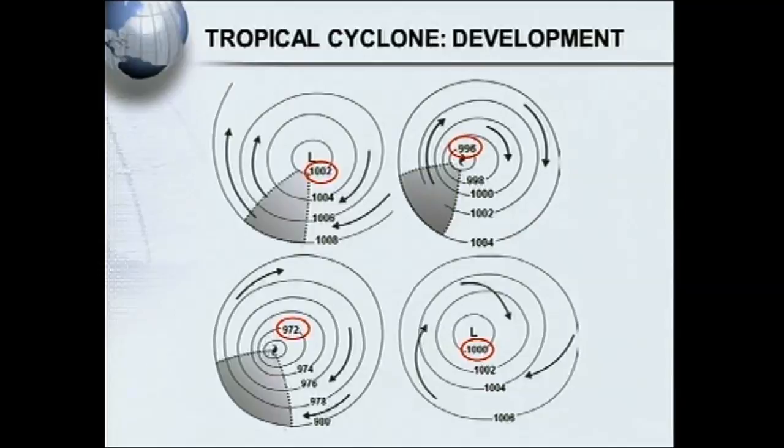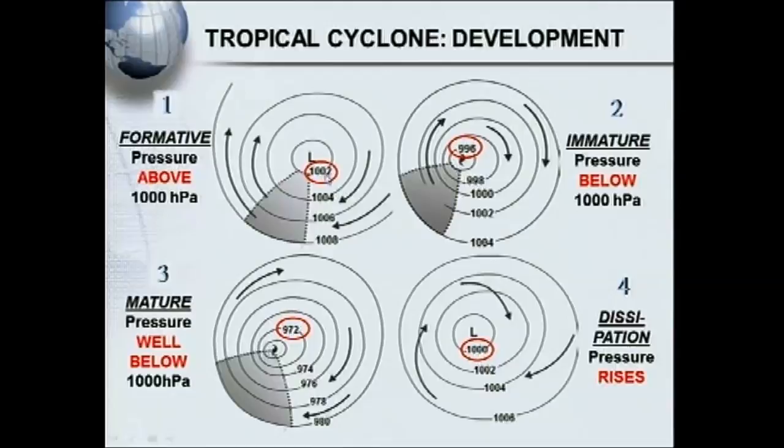The tropical cyclone development is easy — just remember the number 1,000. You've got four stages. The formative stage: air pressure above 1,000 hectopascals. Immature: just below 1,000, for example 996. Mature: well below 1,000, for example 972. And at dissipation, it starts to rise again. When asked in exams what stage a tropical cyclone is in, look at the air pressure relative to 1,000. For a mid-latitude cyclone, you look at the size of the warm sector to determine its stage.